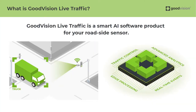Good Vision Live Traffic is a software product. It is software that you can deploy to your smart roadside units or to your edge computer, to your compatible camera or to your server. You can process live camera streams in real time on the fly and extract the data, detect various events, violations and so on.